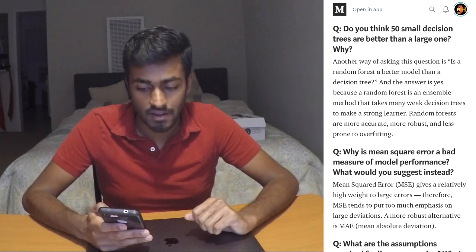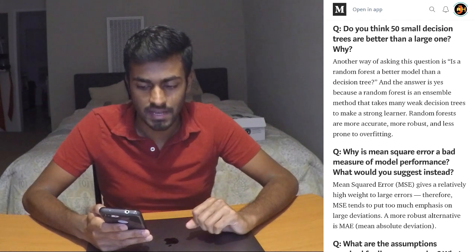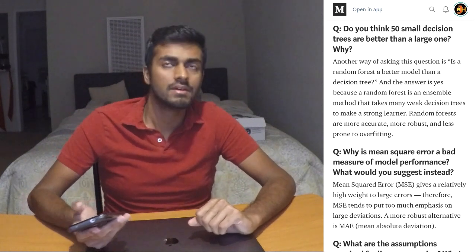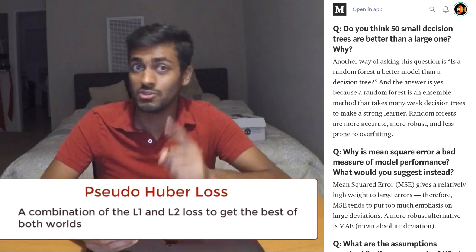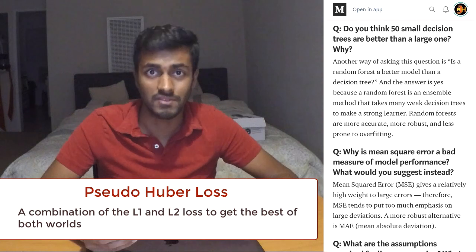Why is the mean squared error a bad measure of model performance? And what do you suggest instead? The mean squared error is not very robust to outliers. For something like this, you can use the absolute loss, which will ignore outliers altogether. But there are some cases where if you have two cohorts of data points, even the L1 or the L2 loss is not really going to work in your favor. But you can use something called the pseudohuber loss, which is a combination of both of those losses.